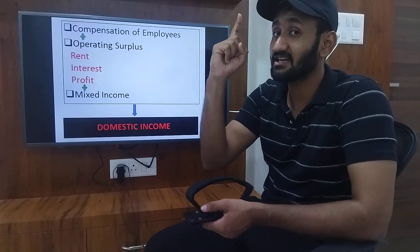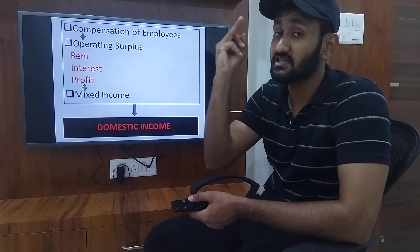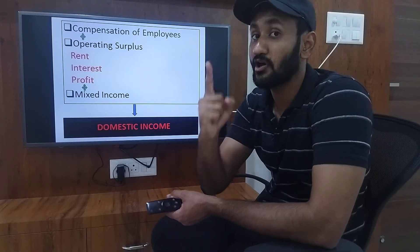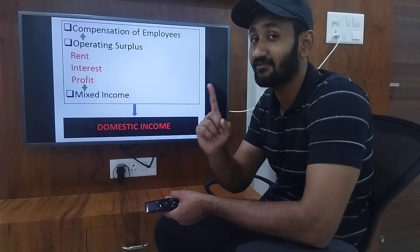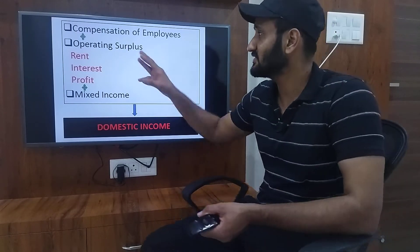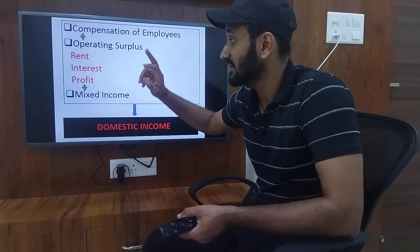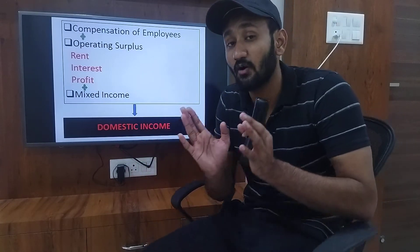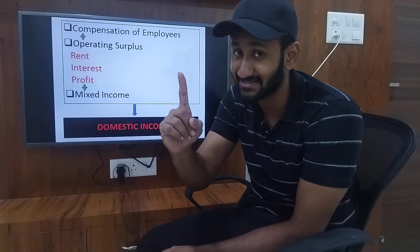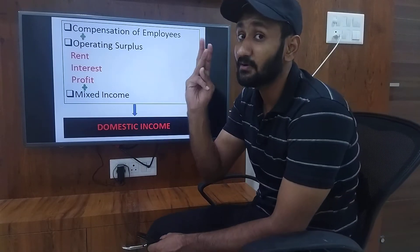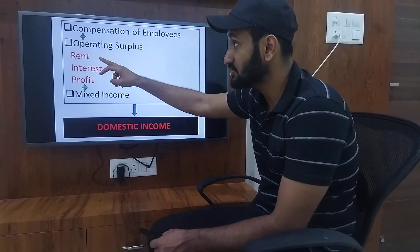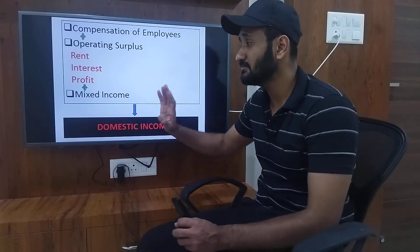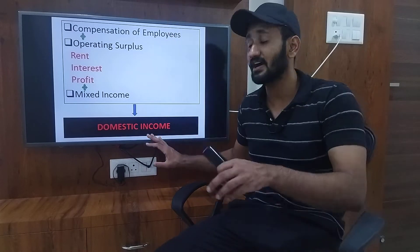Compensation of employees has three parts: wages and salary in cash, in kind, and social security contribution — but only the employer's contribution, and we understood in detail why we take only the employer's contribution. Operating surplus is made up of three things: rent plus interest plus profit. If profit is already given in the question, add it directly. If not given, then: corporate profit tax plus dividend plus undistributed profit. For rent, we take both actual and imputed rent. We also looked at mixed income.